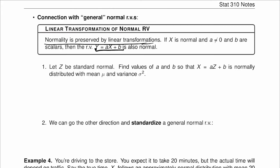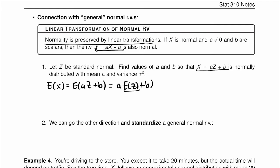First, let's see b when c is standard normal. Find values a and b so that x equal to a times c plus b is normally distributed with mean mu and variance sigma squared. If we find the expected value of x, it's going to be the expected value of a times c plus b, which equals a times the expected value of c plus b. The expected value of a standard normal distribution is zero, so this is going to be b.